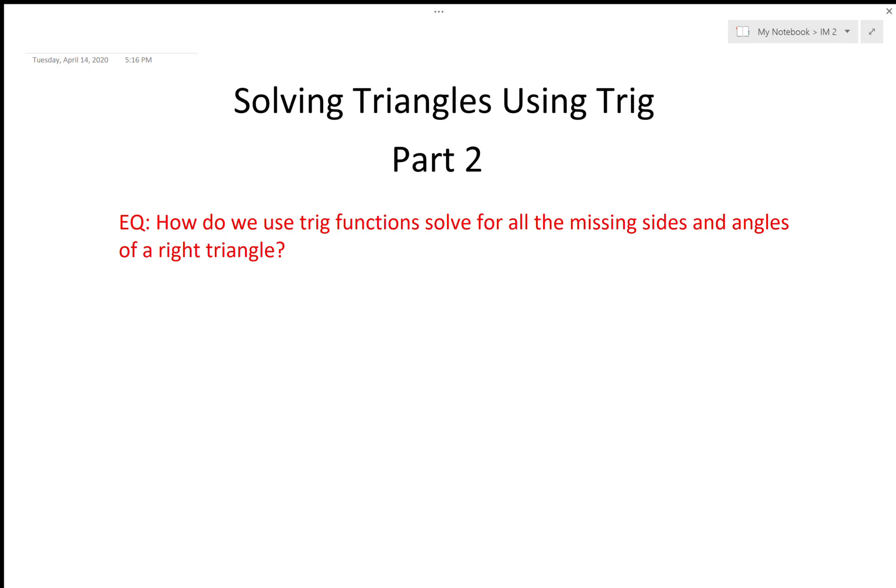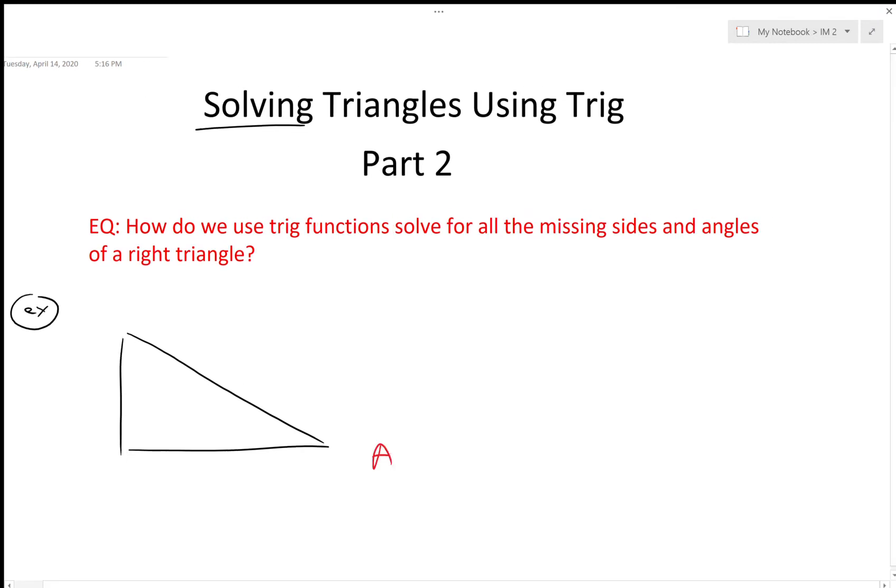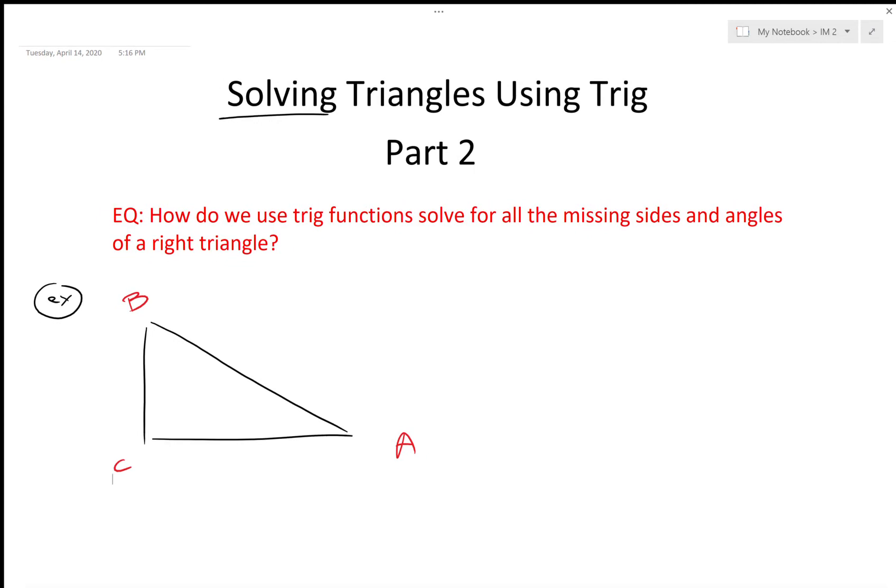Here we have a couple more examples of fully solving our right triangles. We've got ourselves a right triangle, let's go ahead and label it A, B, and C. They give us that C here is a right angle, they give us down here 11.7 and in here 32 degrees.